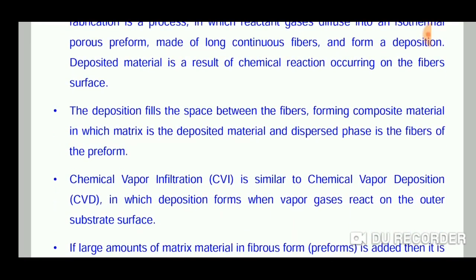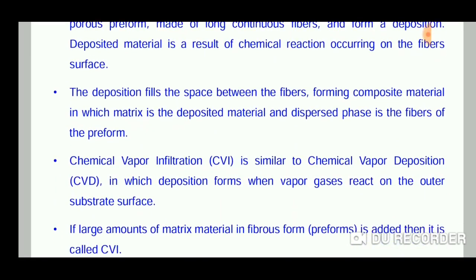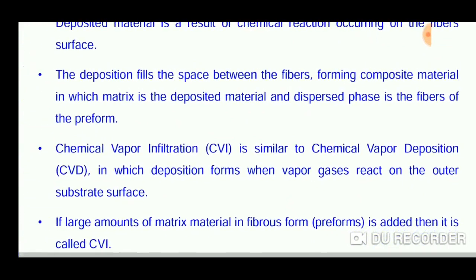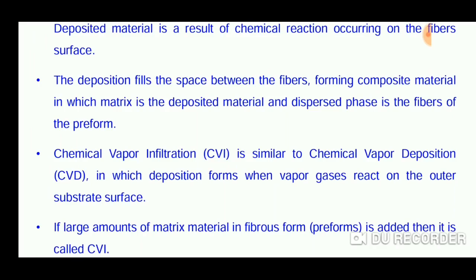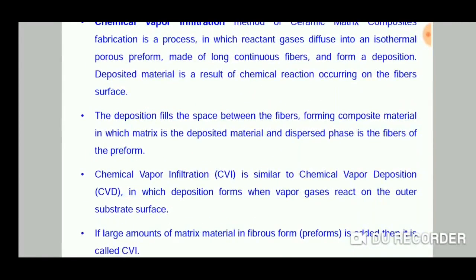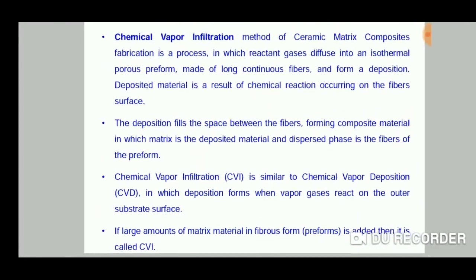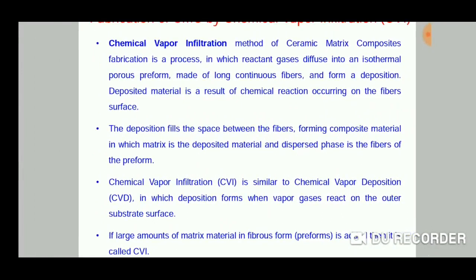The chemical vapor infiltration process is similar to the chemical vapor deposition process, in which the deposition forms when vapor gases react on the outer substrate surface. If a large amount of material in fibrous form is added, then it is called chemical vapor infiltration. If the matrix material is small, it is called chemical vapor deposition.